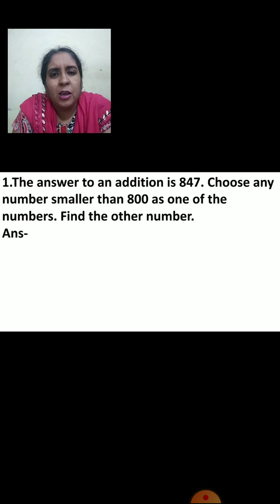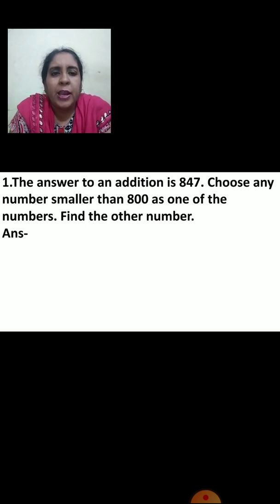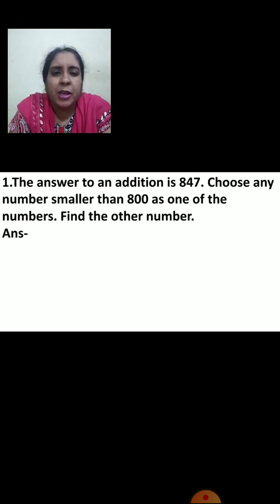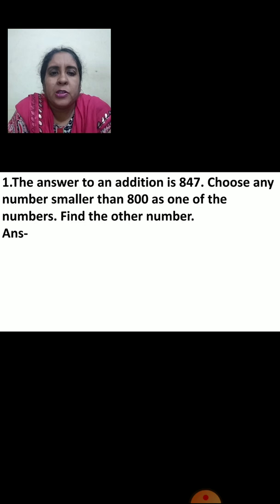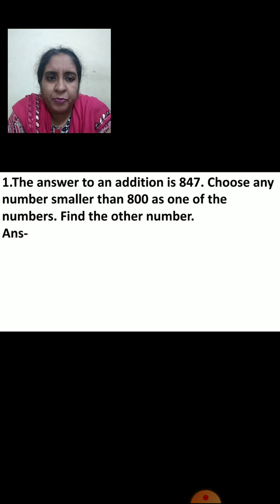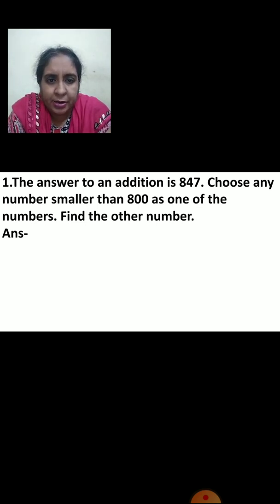Now let us see the question first. The answer to an addition is 847. Choose any number smaller than 800 as one of the numbers and find the other number. If we add any two numbers the answer we get is 847. Now you have to choose any number smaller than 800 so that we can find the other number.